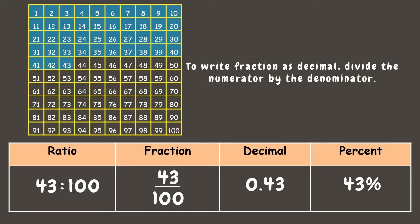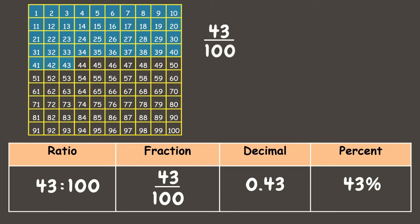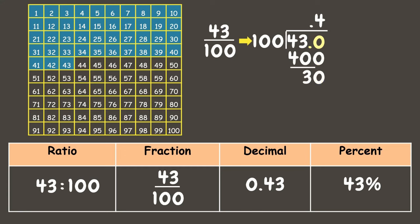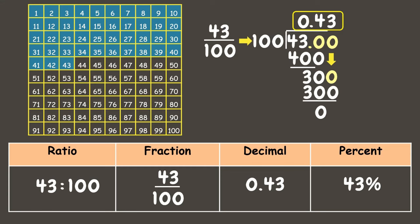To write a fraction as a decimal, we divide the numerator by the denominator. We have 43 out of 100. Since 43 is smaller than 100, we add 0.0, giving 430 divided by 100, which is 4. 4 times 100 is 400; subtracting gives 30. Since 30 is smaller than 100, we add another zero: 300 divided by 100 is 3. 3 times 100 is 300, remainder 0. Don't forget the decimal point aligned from the dividend. Our final answer is 0.43.